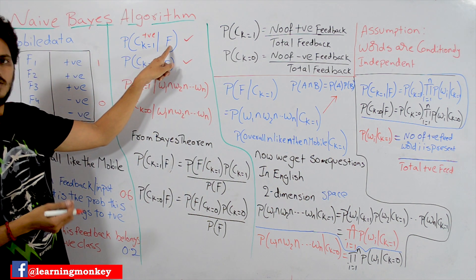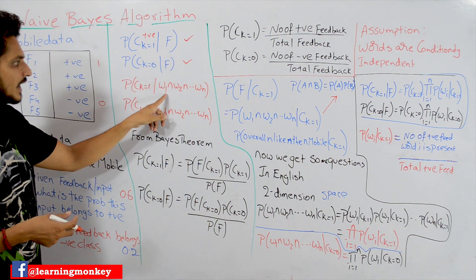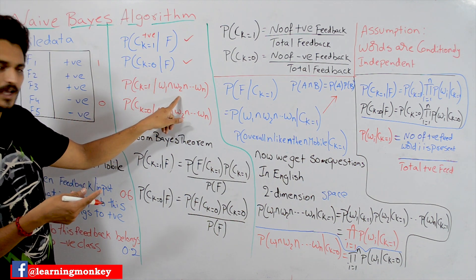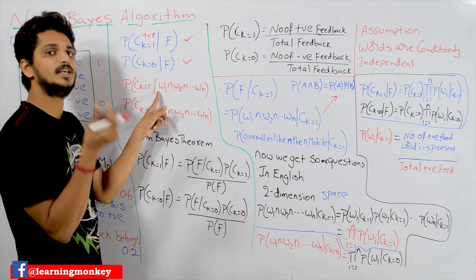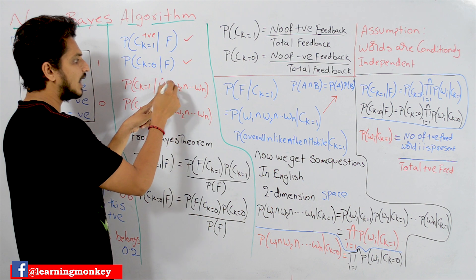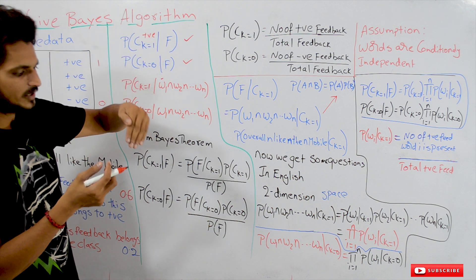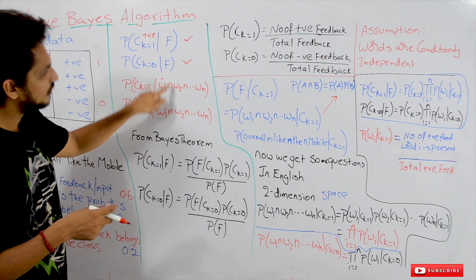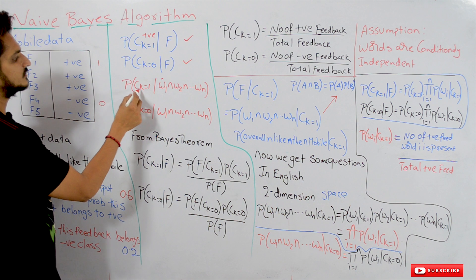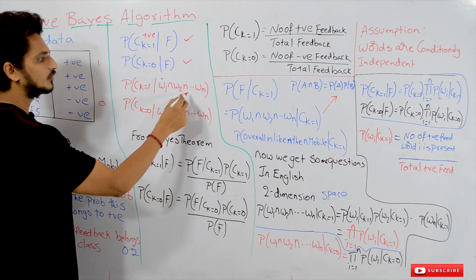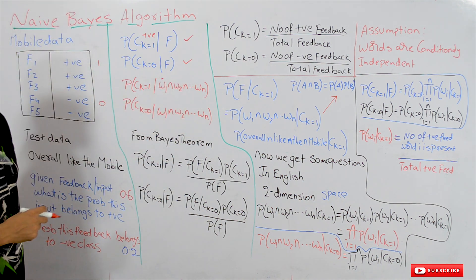In feedback, what do we have? We have a set of words. This feedback can be written as word1 AND word2 AND ... word_n, where AND means the joint probability — words are considered as events. So, P(CK=1 | F) becomes P(CK=1 | W1 AND W2 AND ... W_n), and P(CK=0 | F) becomes P(CK=0 | W1 AND W2 AND ... W_n). These two are what we have to identify.